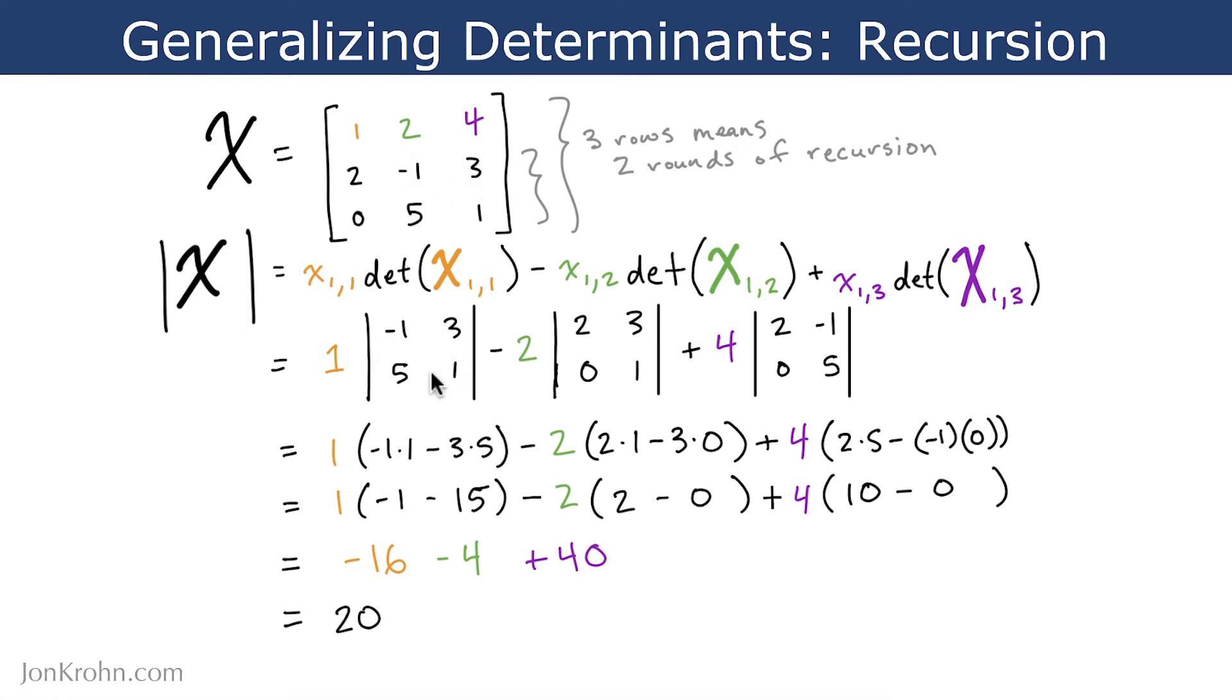And so we can take these four values and put them in here. And we can use that to calculate the 2x2 determinant following the formula that we already know from an earlier video. Alright, so we'll do that in a second. First, let's calculate our other terms here.